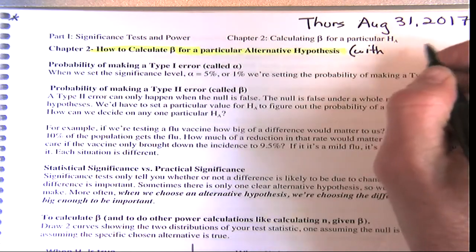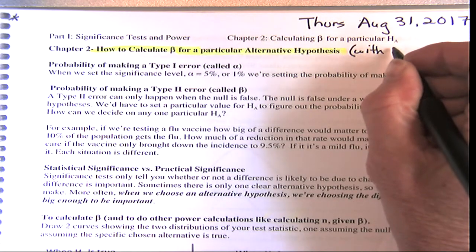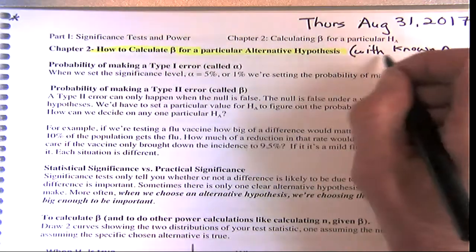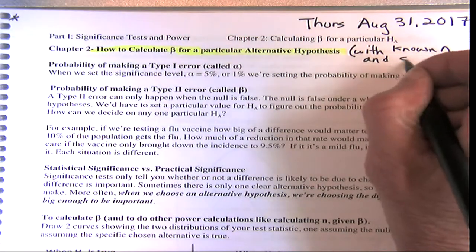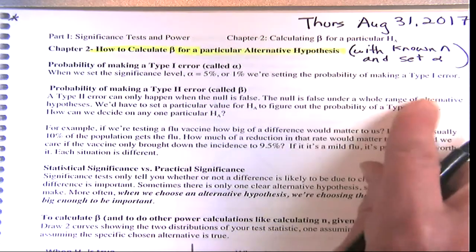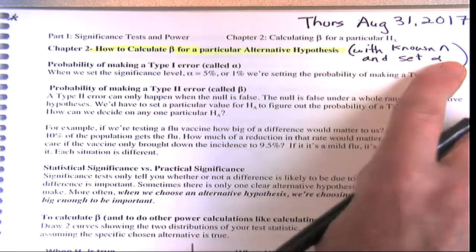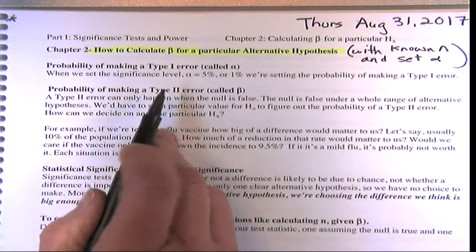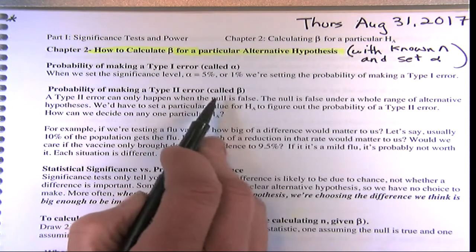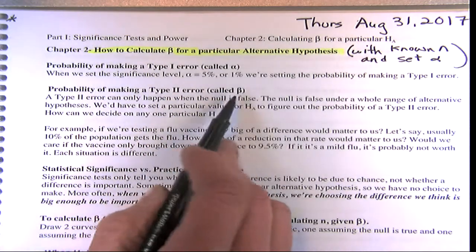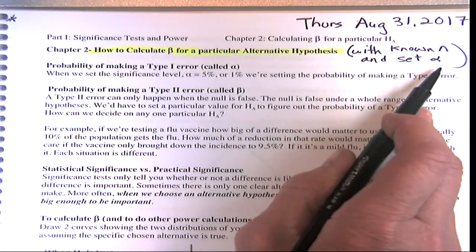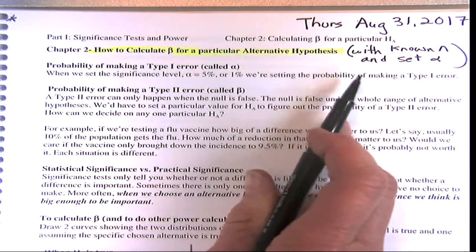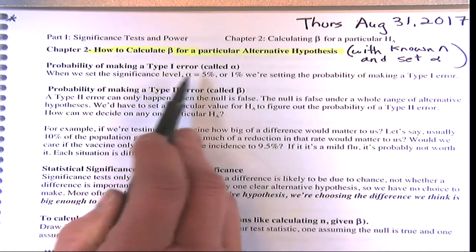With a known sigma, a known sample size, and a set significance level alpha — that will be more clear later on. The probability of making a Type 2 error is called beta. Alpha is the probability of making a Type 1 error.